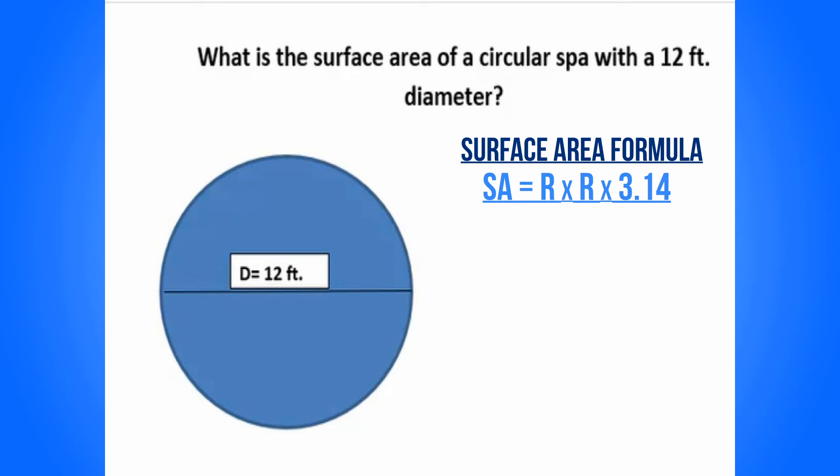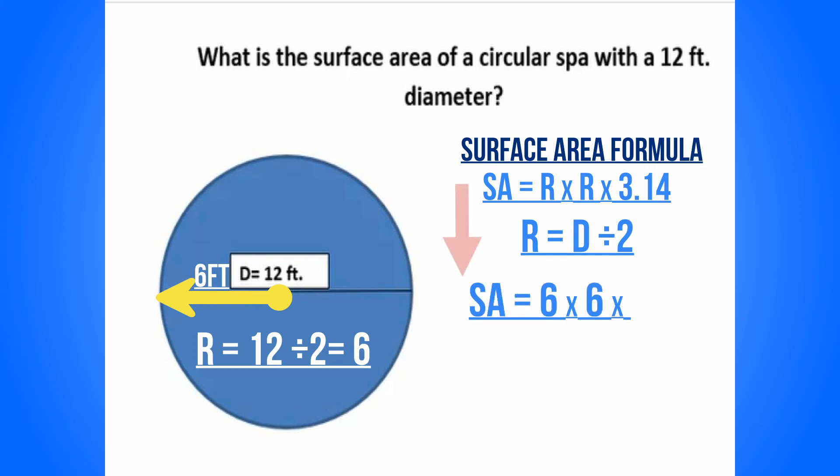So we need to know how to calculate R. R is equal to our diameter divided by 2. So if we take the 12 and divide that by 2, that gives you 6. That will now go into our formula here.